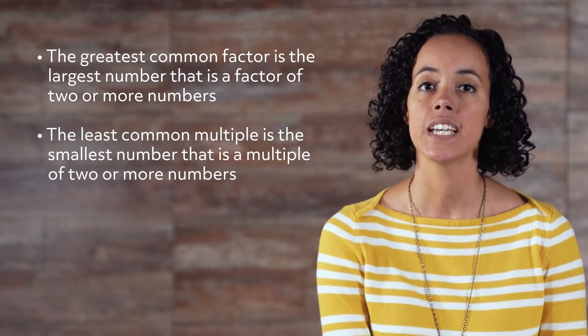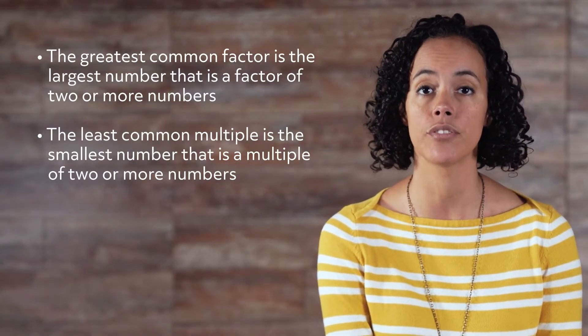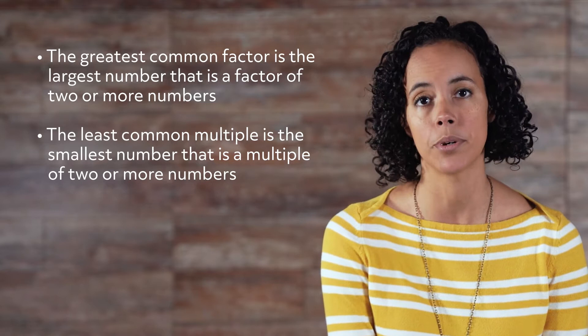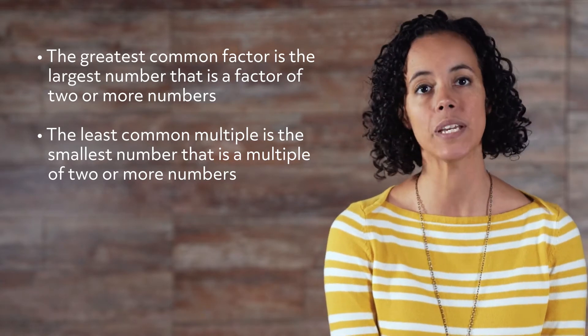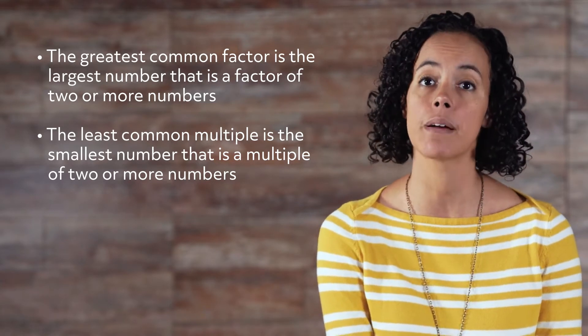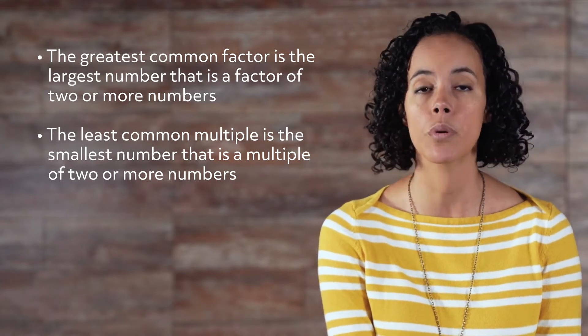The greatest common factor is the largest number that is a factor of two or more numbers, and the least common multiple is the smallest number that is a multiple of two or more numbers.